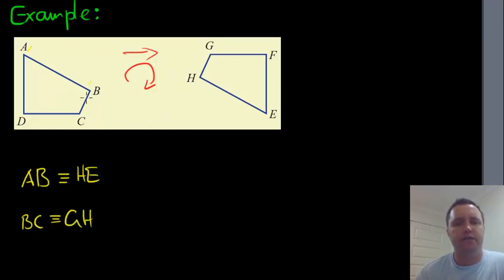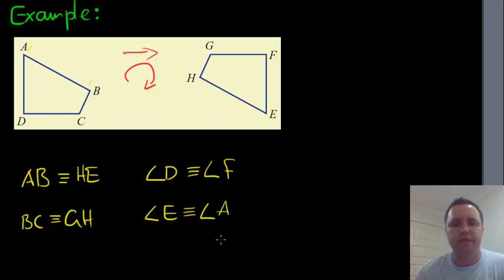We can also do it with angles. The angle D, remember this sign here means angle. The angle D is equivalent to, well, it's part of this right angle looking thing. So angle D is equivalent to angle F. And angle E, which is our most acute angle there, is equivalent to, in our original at least, angle A. So that's sort of some of the things that you're gonna be required to do with this level of congruence and investigating congruence.